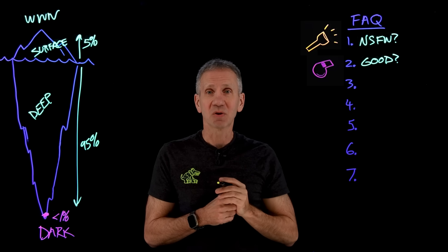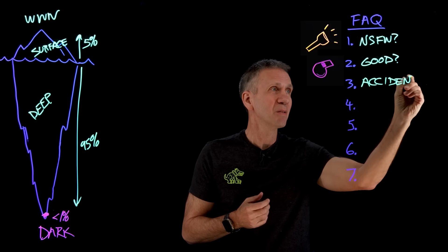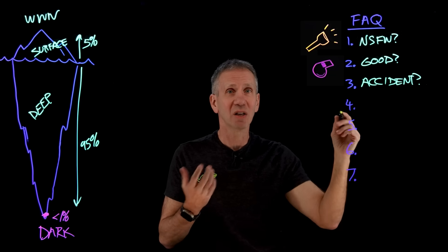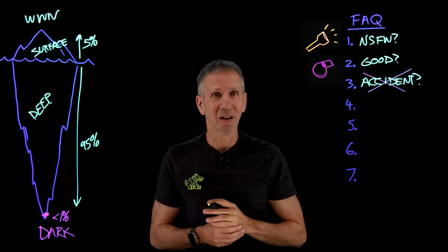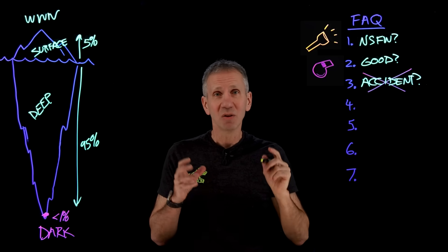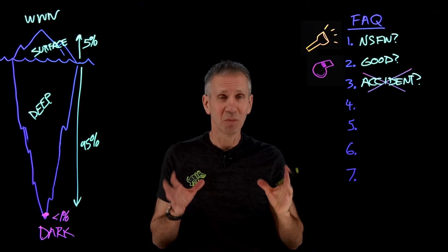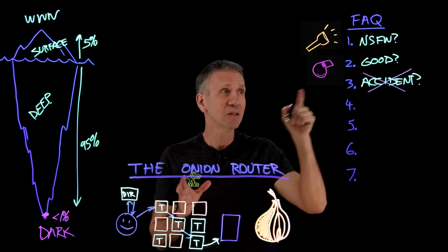The third question: can I get there by accident? Is this something I could just stumble onto and suddenly end up in this crazy dark web place? Well, the answer is it's highly unlikely. In fact, if you remember from the previous video, you would need some technology in most cases — something called the Onion Router, or Tor — in order to navigate through and get there in the first place. So if you're worried about stumbling into this, I wouldn't worry about that. It's far more likely that you'd have to pick and choose to go there intentionally.